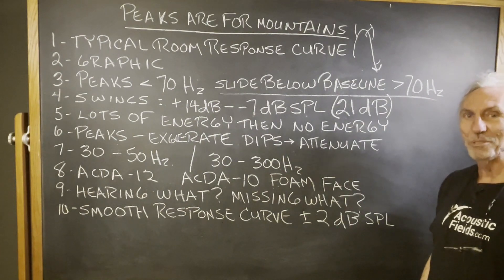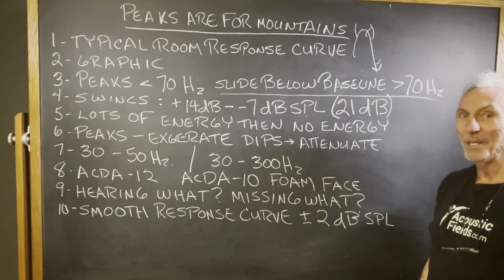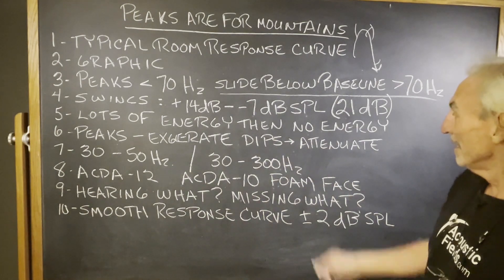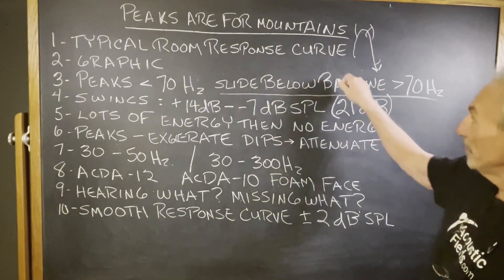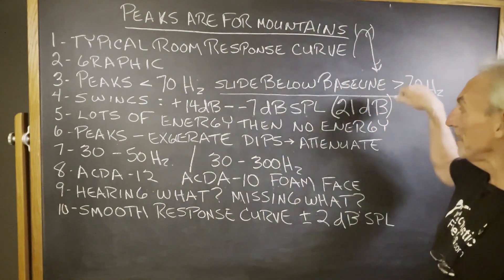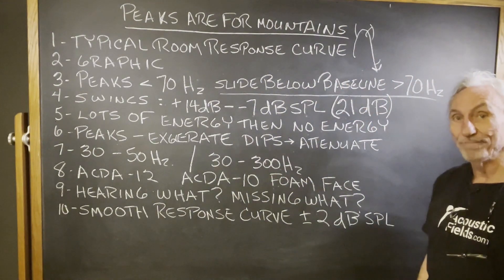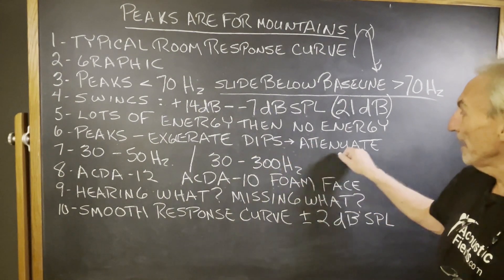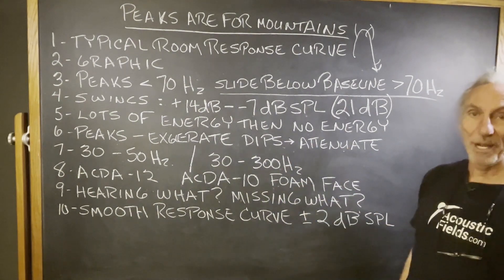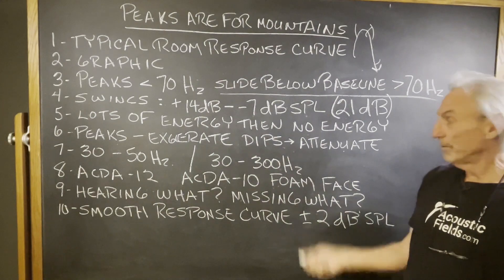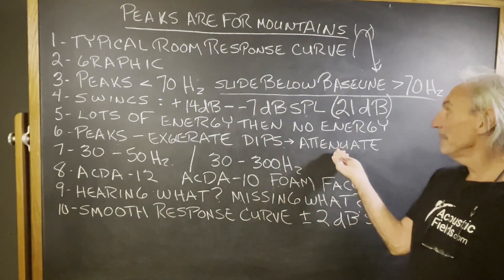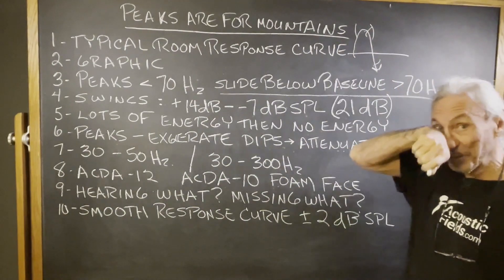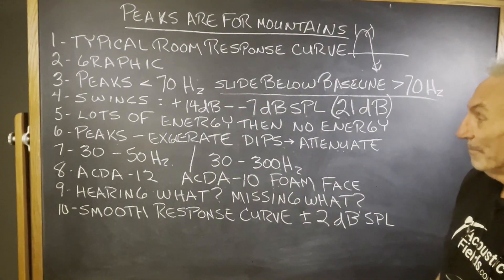What's going on there? You're losing something or you're gaining too much of something you don't want — same thing. Lots of energy, then no energy — big peaks and then no energy. We know peaks exaggerate and dips attenuate, so you can't hear anything with a dip and you get too much of everything with the peak. That's not good.